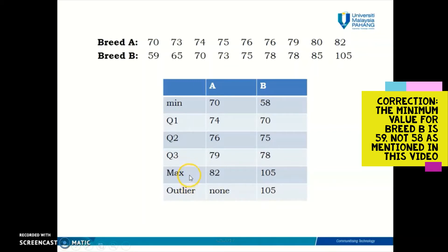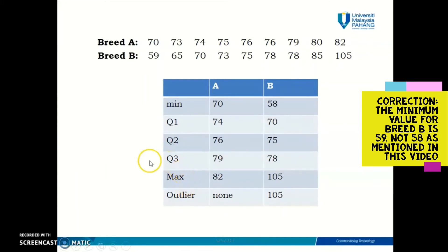Everyone pay attention. There is an extra step that you need to do before you start drawing. There is an extra step involved if your data set contains outliers, which is you need to update your minimum and maximum values if outliers exist in any of the data set. Let's take a look at data A. From the previous video, we determined that breed A has no outliers, so the minimum and maximum values here are fine.